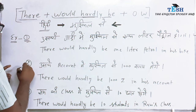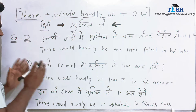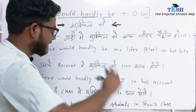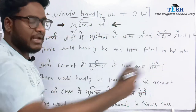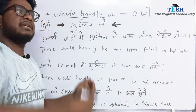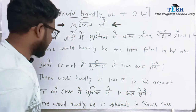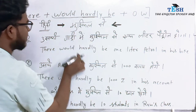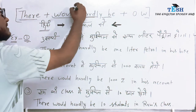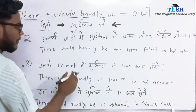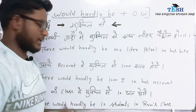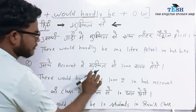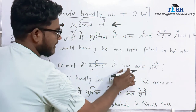Your sentences can be according to any situation. Whenever the meaning of 'muskil se' comes up, you need to frame the sentence using this same structure. For example: 'us ki account mein muskil se 1000 rupye honge' — there would hardly be 1000 rupees in his account.